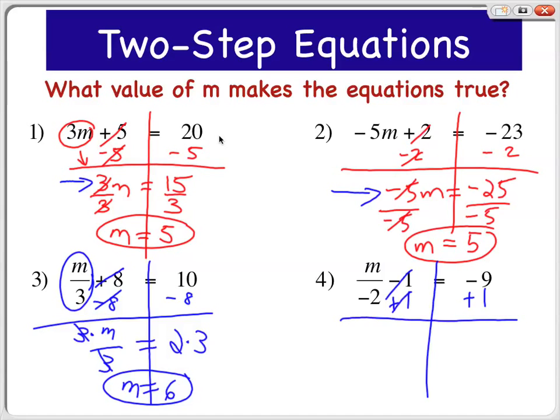And I'll be left with m divided by negative 2 equals negative 9 and positive 1, that's negative 8.